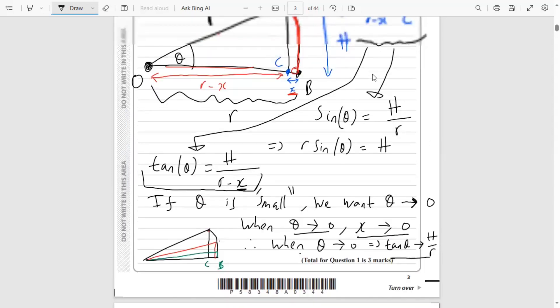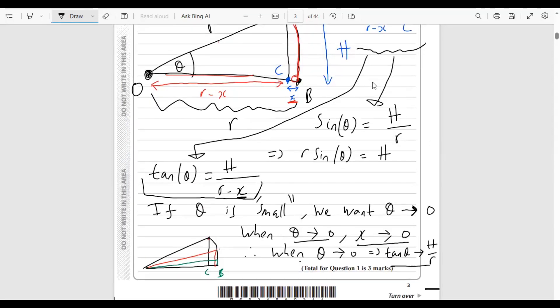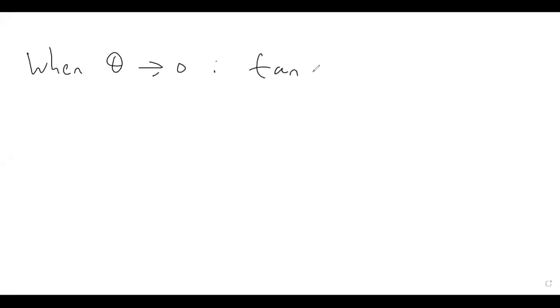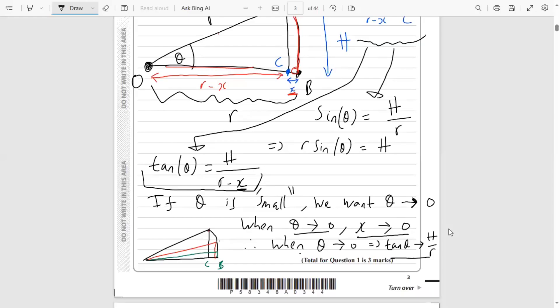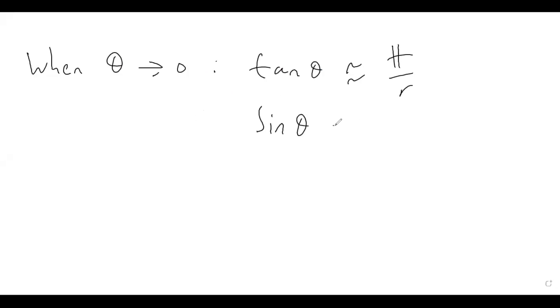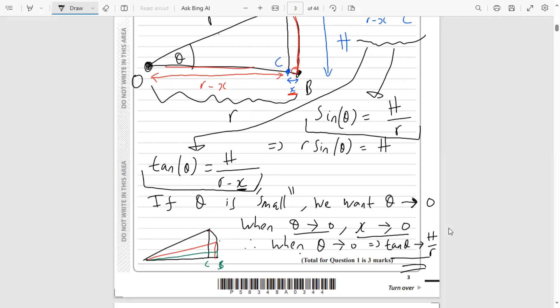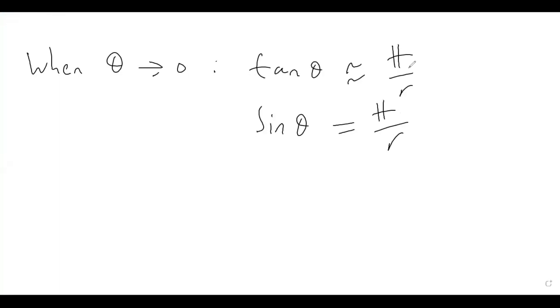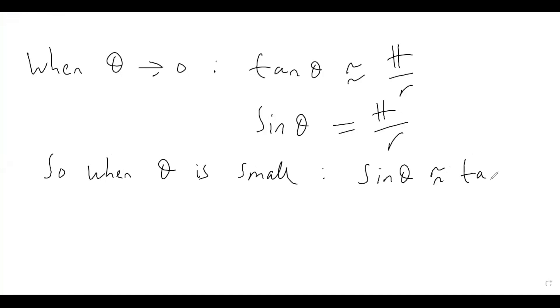Going to the whiteboard for more space. So when theta is small, tan θ is approximately H/R. And sin θ is exactly equal to H/R. So what we can say is that when theta is small, sin θ is approximately tan θ — that's what we can tell from this.